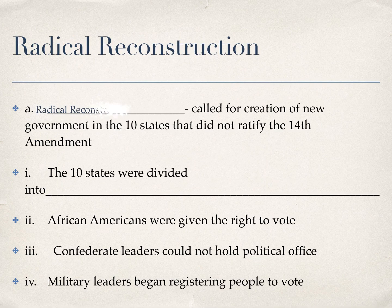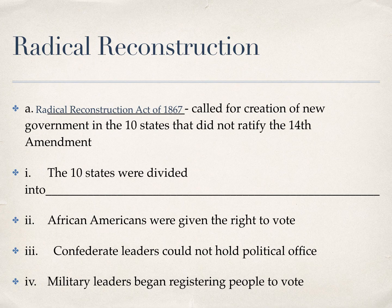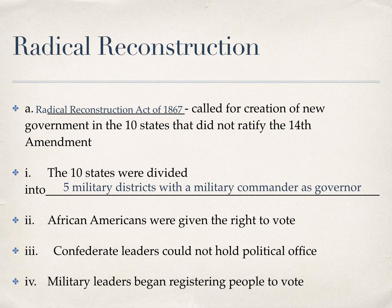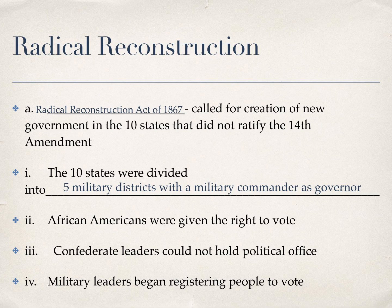This led to Congress passing the Radical Reconstruction Act of 1867, which called for the creation of new governments in the 10 states that did not ratify the 14th Amendment. There were 11 states in the Confederacy that seceded; Tennessee had passed the 14th Amendment, so they were not included. Congress took those 10 remaining states and divided them into five military districts, each with a military commander as governor. Congress appointed a military commander over each district to oversee the creation of new rights for African Americans in the South — they were given the right to vote, Confederate leaders could not hold political office, and military leaders began registering people to vote.